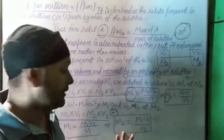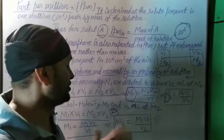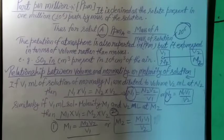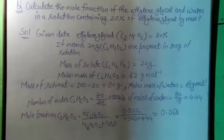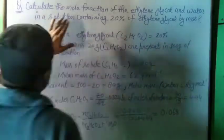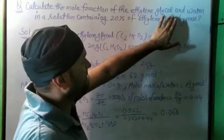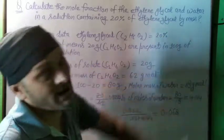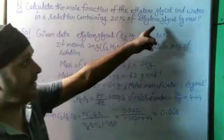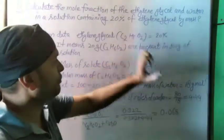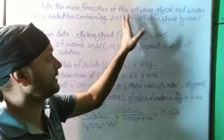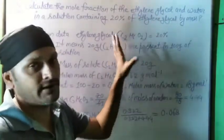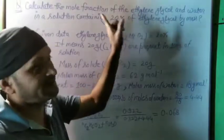Now let's move on to a new numerical question. Calculate the mole fraction of ethylene glycol and water in a solution containing 20% of ethylene glycol by mass. Since 20% is mixed, that means in 100 grams of solution, 20 grams is ethylene glycol.